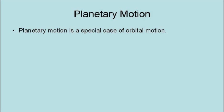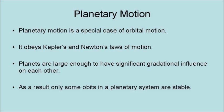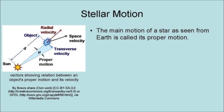Planetary motion is a special case of orbital motion. It obeys Kepler's and Newton's laws of motion. However, planets are large enough to have significant gravitational influence on each other. As a result, only some orbits in a planetary system are stable.